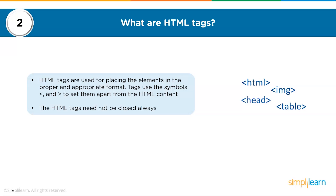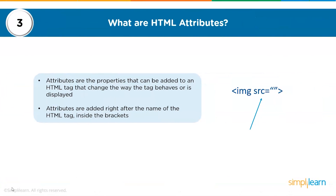The third question: what are HTML attributes? Attributes are properties that can be added to an HTML tag that change the way the tag behaves or is displayed. For example, an image tag has a src attribute which specifies the source from which to display the image. Attributes are added right after the name of the HTML tag inside the brackets, and can only be added to opening or self-closing tags, never in closing tags.